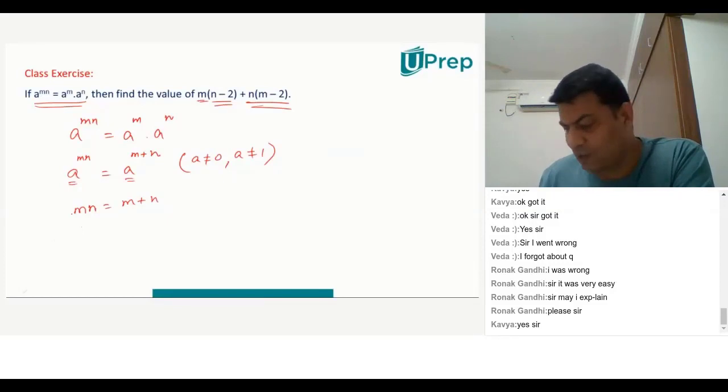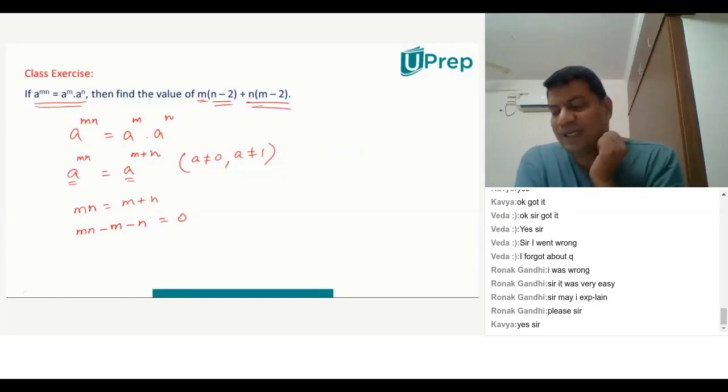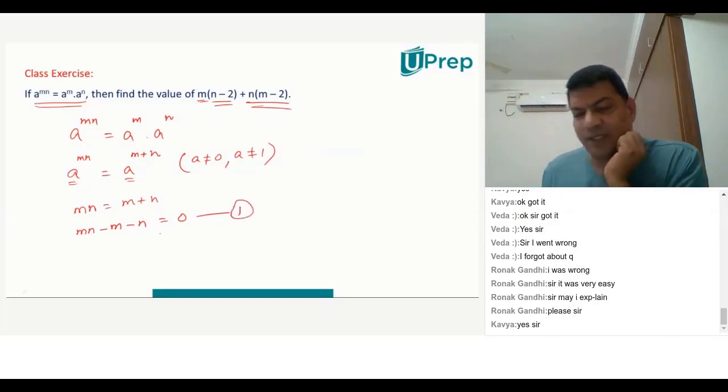If we know that mn is equal to m plus n, we also know that mn minus m minus n, if everything comes this side, this is equal to 0. mn minus m minus n is equal to 0 is known to us. This is given. This condition is given to us. Okay. From the given problem, if this is true, then this is true.